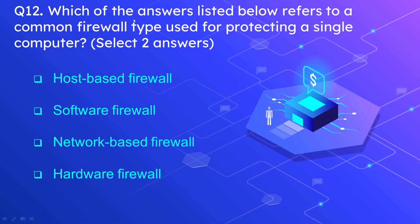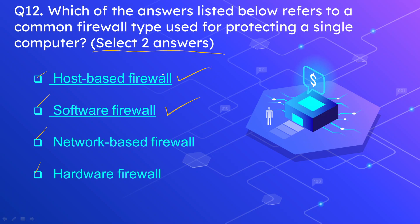Question number 12: Which of the following refers to a common firewall type used for protecting a single computer? Select two answers. The options are host-based firewall, software firewall, network-based firewall, and hardware firewall. The correct options are host-based firewall and software firewall. A host-based firewall is installed or enabled on a single host, such as the Windows Firewall on our computers. A software firewall, again like Windows Firewall, is a software firewall protecting a single computer.